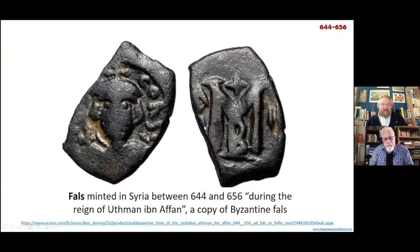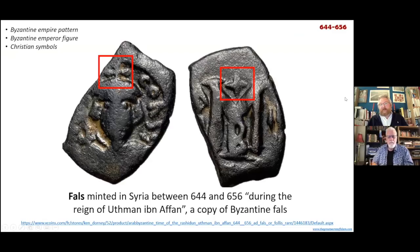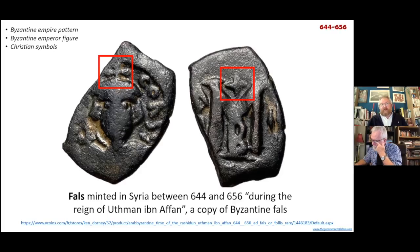Let's get back to hard evidence — the coins, the inscriptions. For example, this coin minted between 644 and 656. According to the standard Islamic narrative, this should be a coin minted by Uthman ibn Affan. It is a crude copy of a Byzantine follis, and we also see the M and the Christian crosses, which tells us that during the time of Uthman, the Arab leader who minted this coin was still using a Byzantine Empire pattern with the Byzantine Empire figure and Christian symbols.